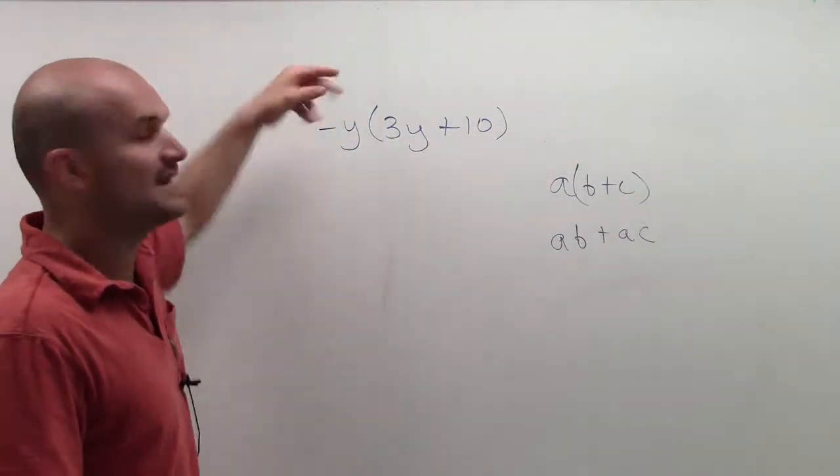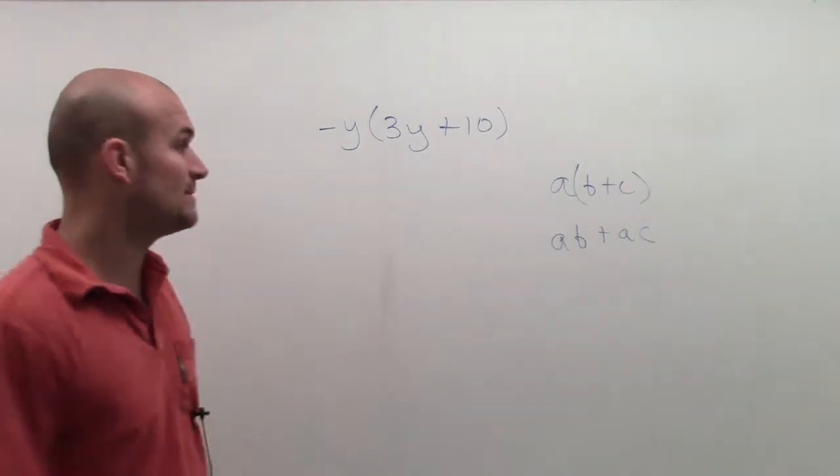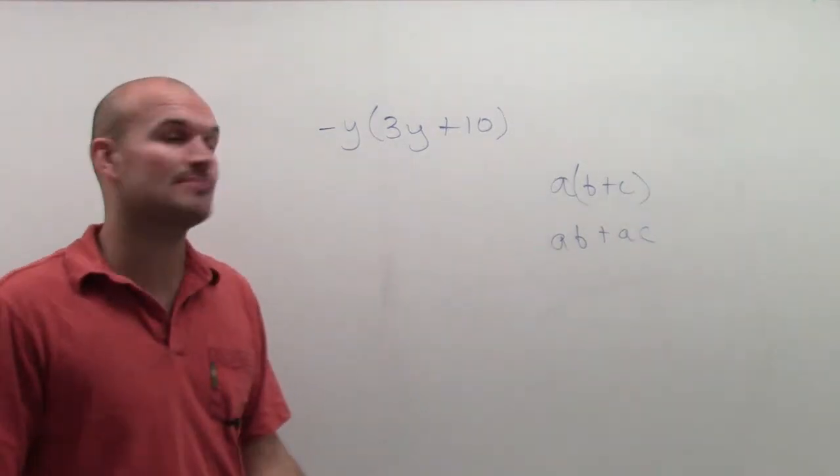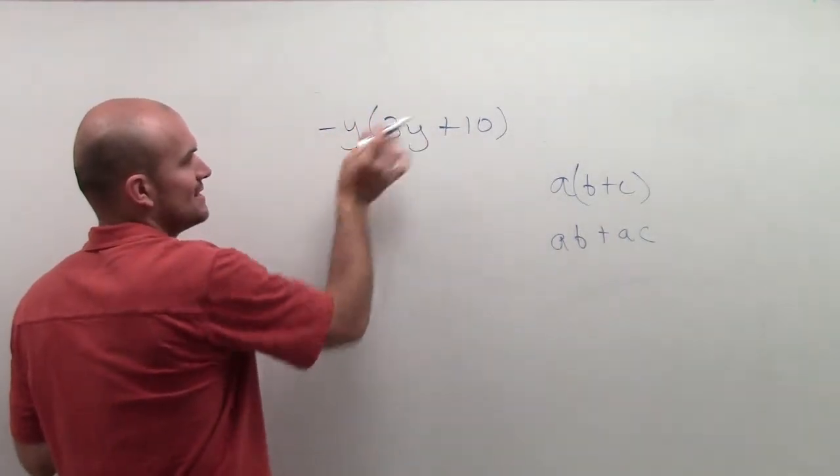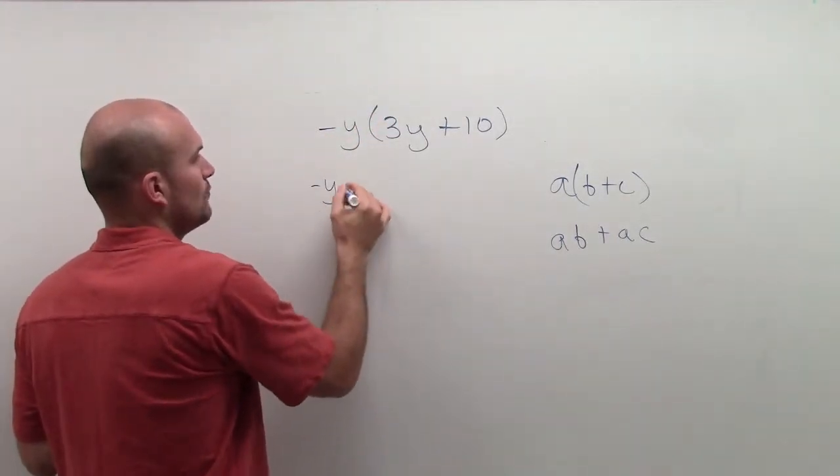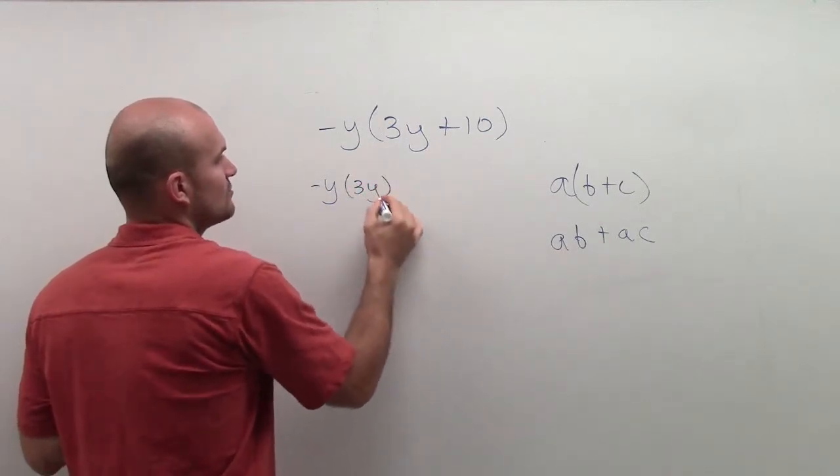So here, what I have is a negative y. It's a little bit different than my a and (b plus c), but we're going to adapt with it. So what I can do is negative y times 3y.